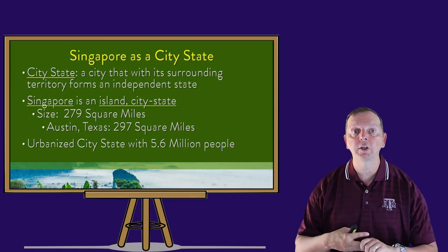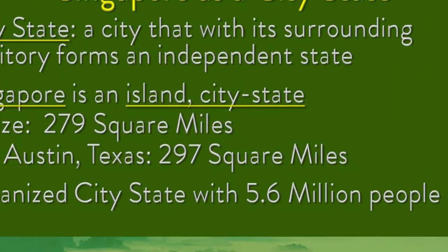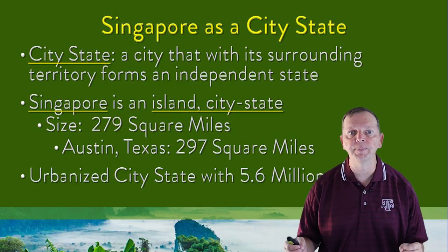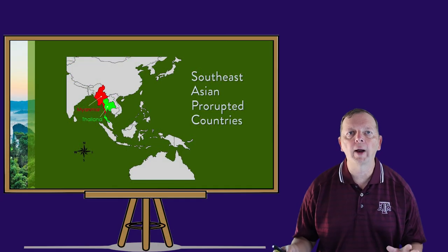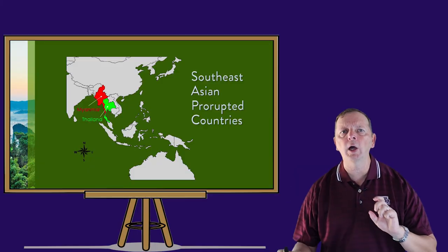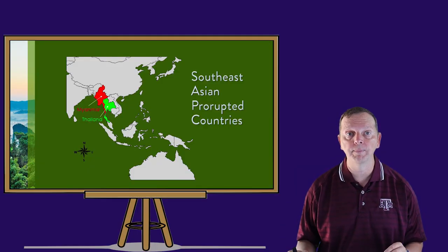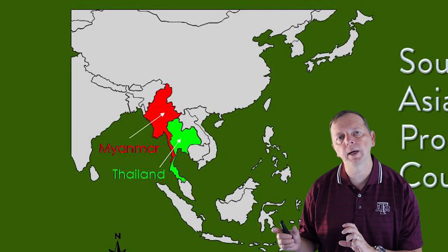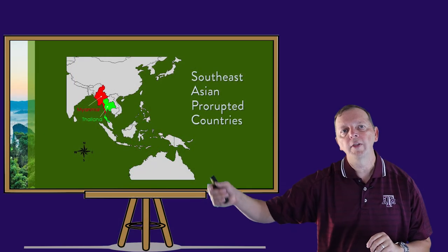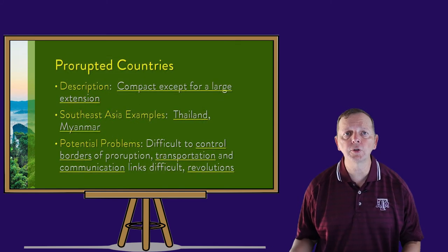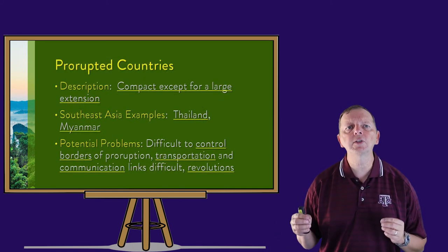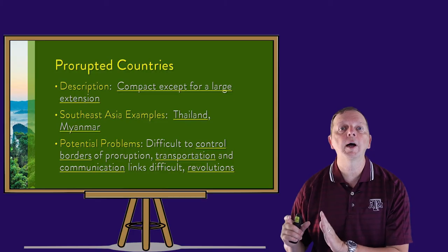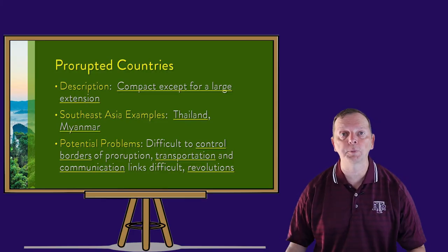However, with a population of 5.6 million people, Singapore is five times more populated than Austin and 24 times more populated than College Station — so we can see it's pretty urbanized. Now, if you take a compact country and put a tail on it, you get what is called a prorupted country. If you look at Vietnam and Myanmar, you essentially have two compact countries, but they each have an extension or tail that runs down towards the Malay Peninsula. These extensions are what cause problems for the country, as it's difficult for the government to move goods and services into the area, and these regions are prone to become sanctuaries for anti-government forces that might spur revolutions.